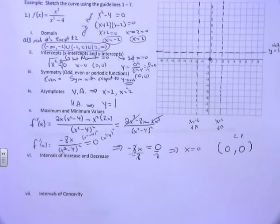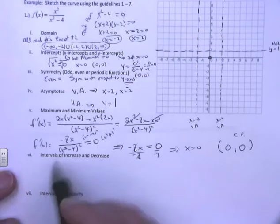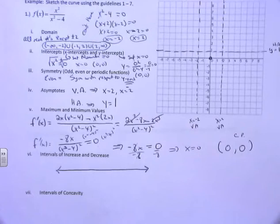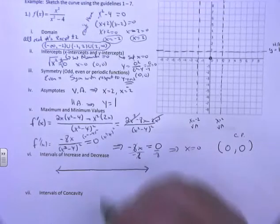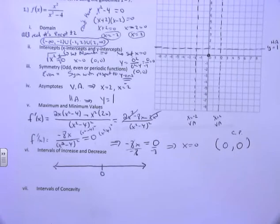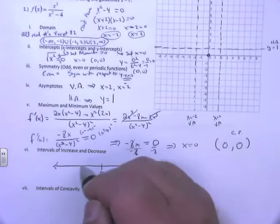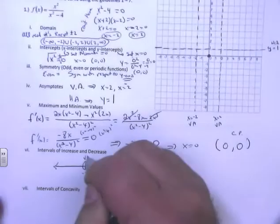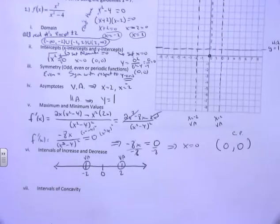For intervals of increase and decrease — draw a number line. But here's what most people get wrong: you don't just put the critical number 0 on the number line. You must also include the vertical asymptotes (x = -2 and x = 2) because those points don't exist in the function. Mark -2 and 2 with open circles on the number line. This divides your graph into three different parts.